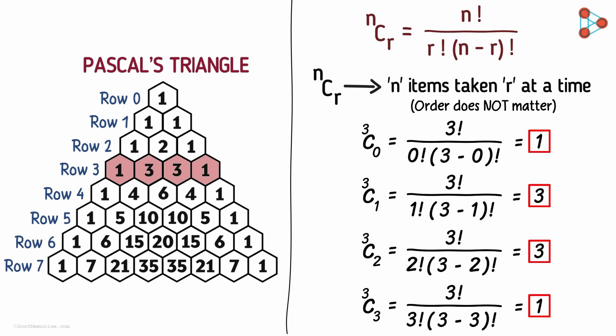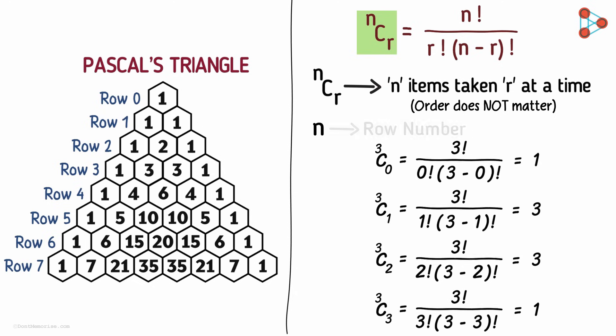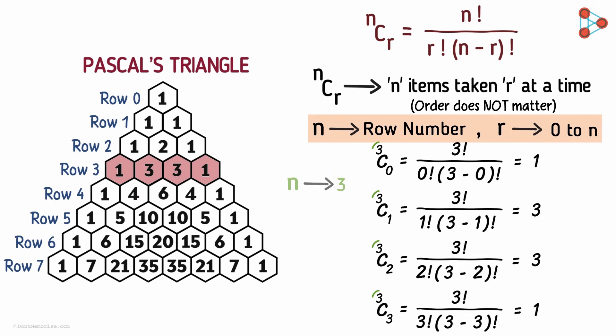What can you conclude from this? Each number in Pascal's triangle is given by a combination nCr, where n is the row number and r ranges from 0 to n. We saw how it works for the third row — n is 3 and r ranges from 0 to 3.